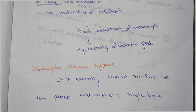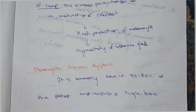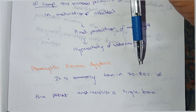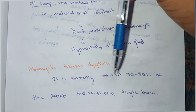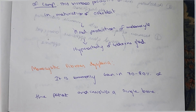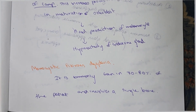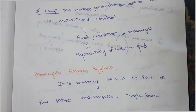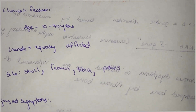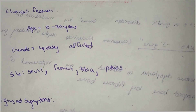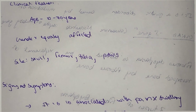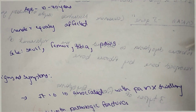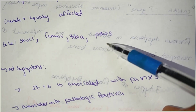The first type is monocystic fibrous dysplasia. It is most commonly seen, accounting for 70 to 80% of patients. It involves a single bone. The most commonly affected bones are the skull, femur, tibia, and pelvis.